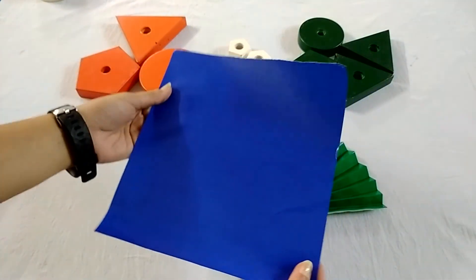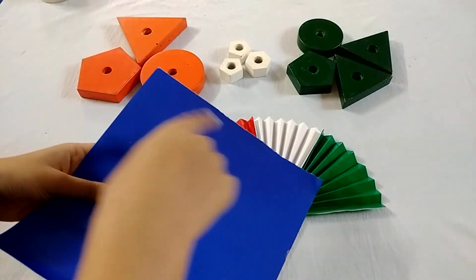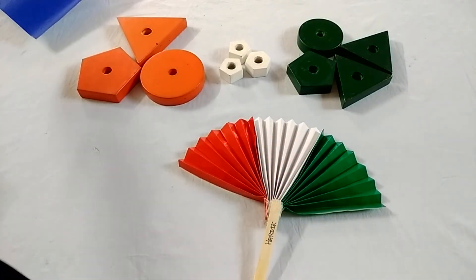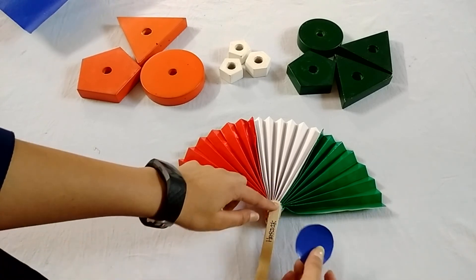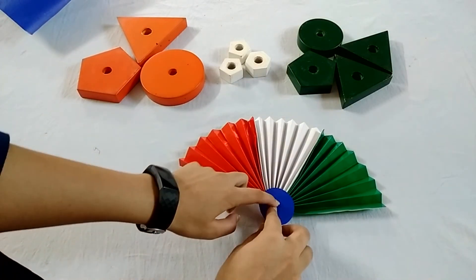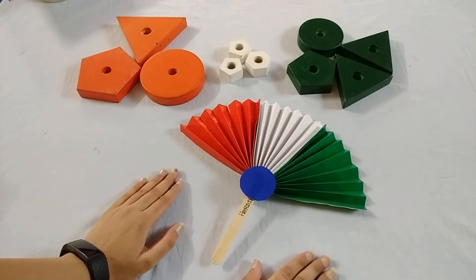Now take a blue sheet and cut a circle, but small one like this, and paste it over here and our fan is ready.